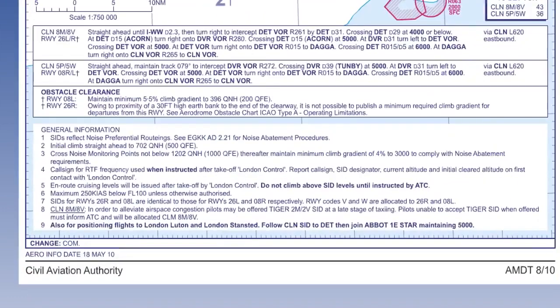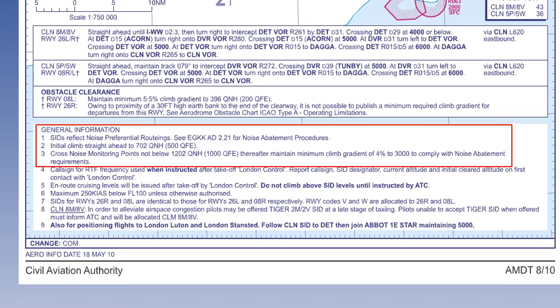The noise abatement regulations for turns after take-off and obstacle clearance, laid down in PANS Ops Volume 2, permit turns at 400 feet, or 120 metres, with terrain clearance of at least 300 feet, or 90 metres.